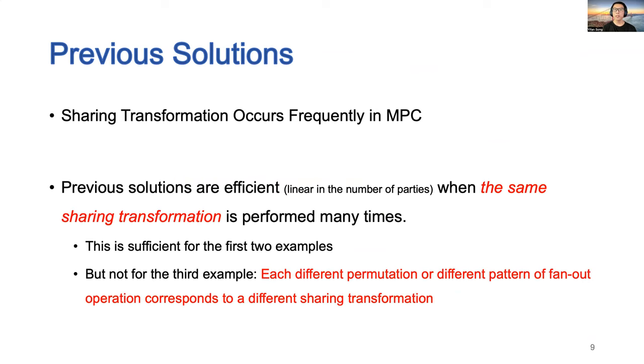Previous solutions achieved linear communication in the number of parties only when the same sharing transformation is performed multiple times. This is sufficient for the first two examples, since we need to perform the same transformation many times. However, for the third example, each different permutation or different pattern of fan-out operation corresponds to a different sharing transformation. The efficiency of previous solutions degrades to being quadratic in the number of parties.